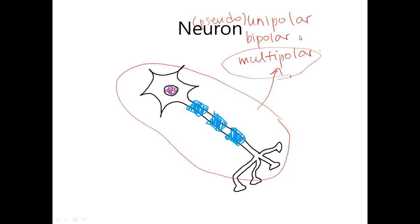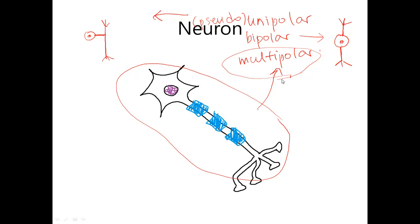A bipolar neuron looks like this — this is the cell body — so from the cell body there are two main protrusions that convey or accept information. A pseudo-unipolar neuron looks like this; this is the cell body, so there is only one protrusion from the cell body. And multipolar neuron looks like this, so there are many, many protrusions from the cell body.